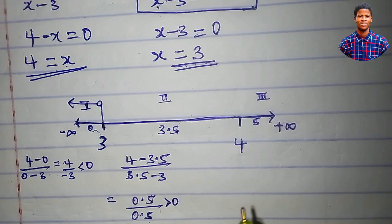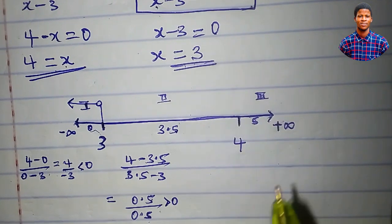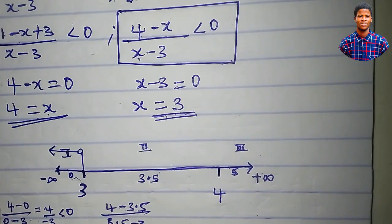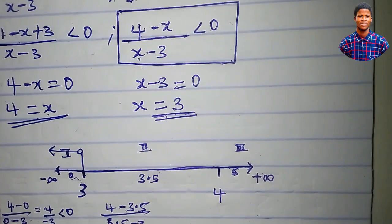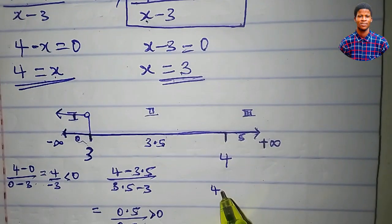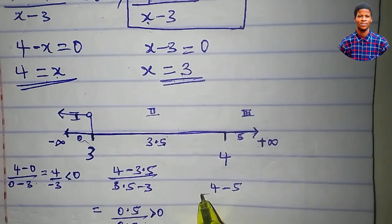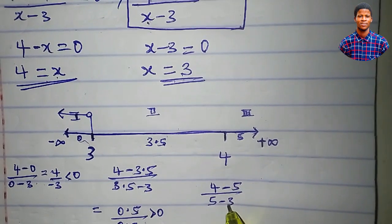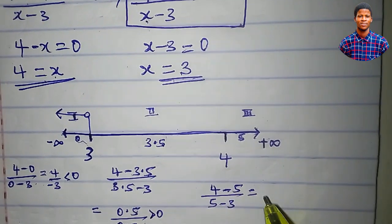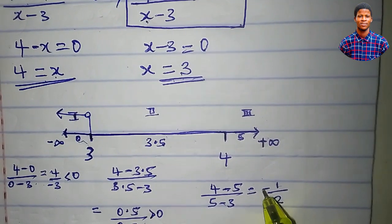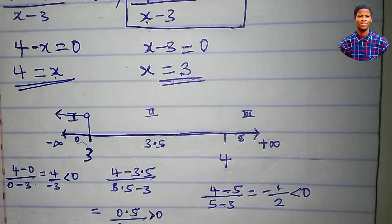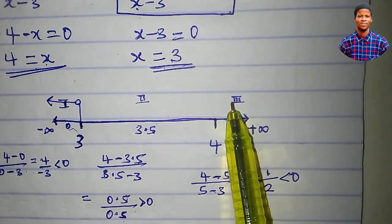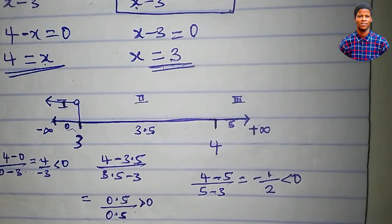Let's check region 3 using x equal to 5. We'll have 4 minus 5, all over 5 minus 3. 4 minus 5 is minus 1; 5 minus 3 is 2. Minus 1 over 2 is less than 0 because it is negative. Region 3 satisfies the inequality.